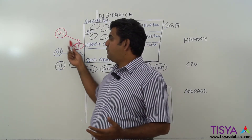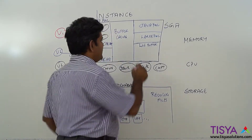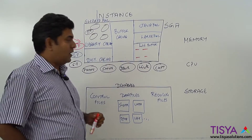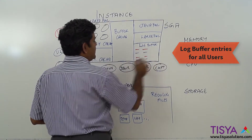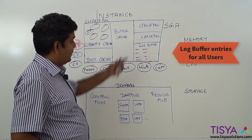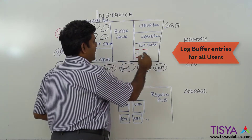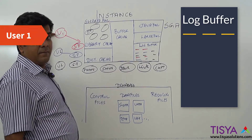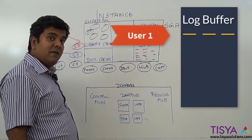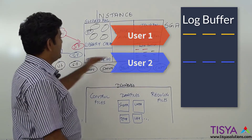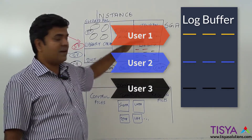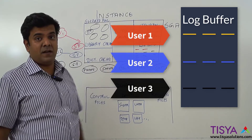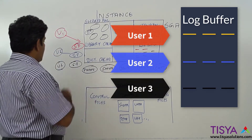Every user who performs changes will result in log buffer entries being created. Let's say user1 makes a DML but doesn't commit yet, and simultaneously user2 makes his DML and user3 makes his DML. So the log buffer entries could get interlaced between the various transactions being done by the users.